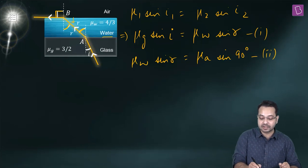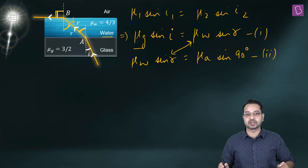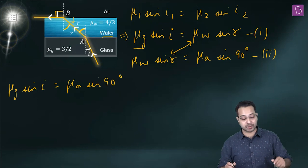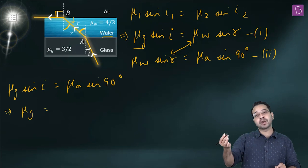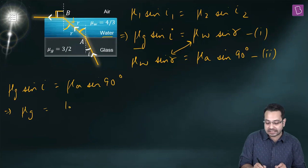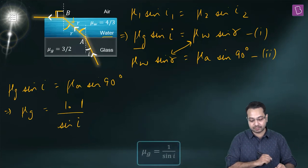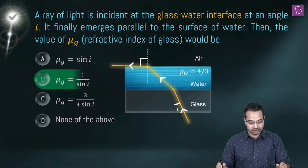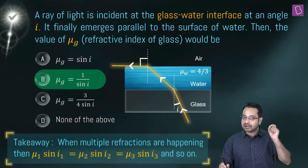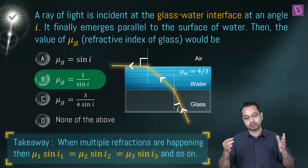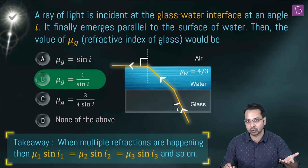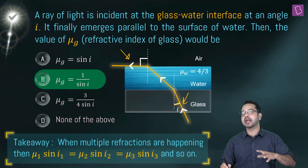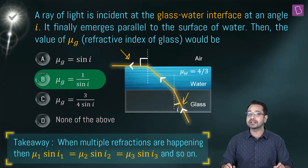We have two equations and need to find μ_G. The left-hand side of both equations contains the same quantity μ_water × sin r, so we can directly equate: μ_G × sin i = μ_air × sin 90°. Since μ_air = 1 and sin 90° = 1, we get μ_G = 1/sin i. The takeaway is that for multiple refractions, μ₁ sin i₁ = μ₂ sin i₂ = μ₃ sin i₃, allowing direct comparison between first and last media.